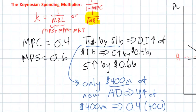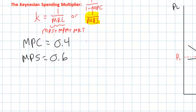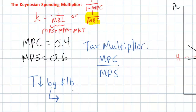To find the size of the tax multiplier there is a simple formula: the tax multiplier equals negative MPC divided by the marginal propensity to save. The negative sign indicates that the change in aggregate demand will always be inversely proportional to the change in taxes — if taxes fall, aggregate demand will increase; if taxes rise, aggregate demand will decrease. For our example, the tax multiplier equals negative 0.4 divided by 0.6, which gives us a multiplier of negative 0.67.